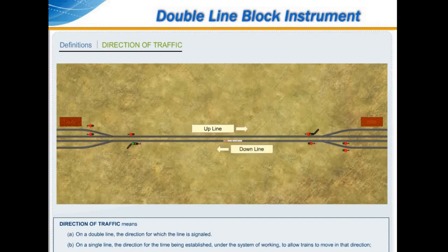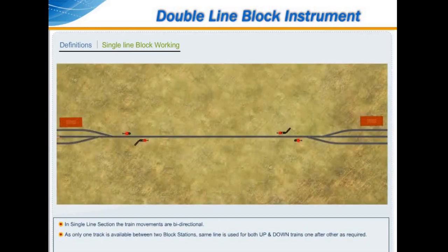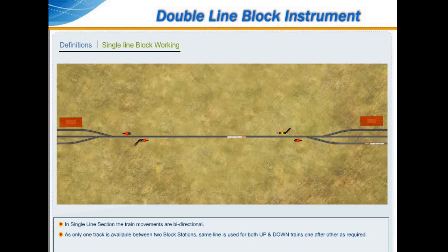On a single line section, the train movements are bi-directional. As only one track is available between two block stations, the same line is used for both up and down trains, one after the other as required.